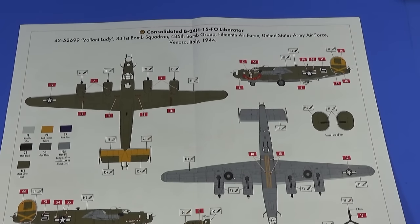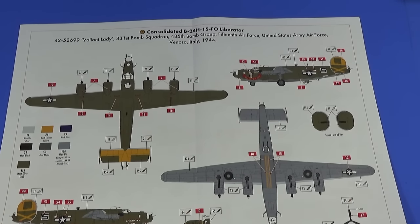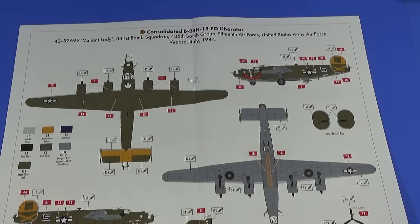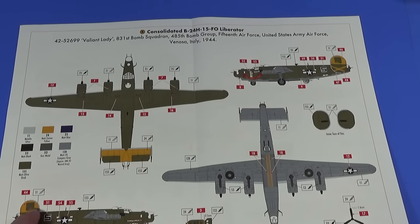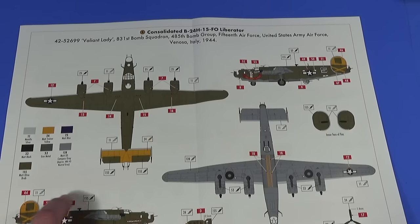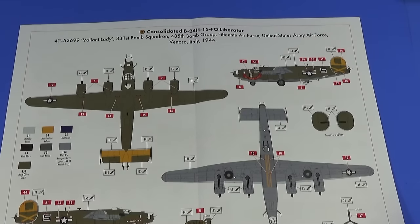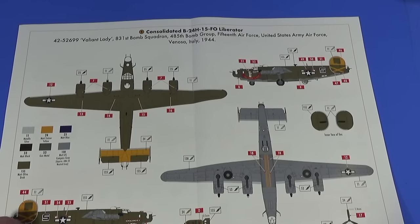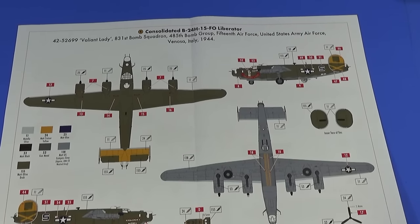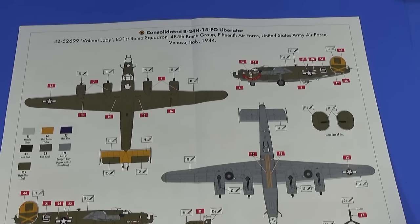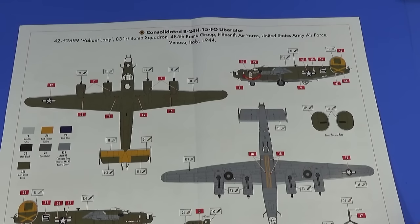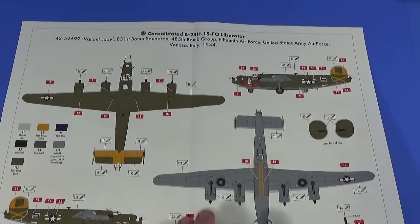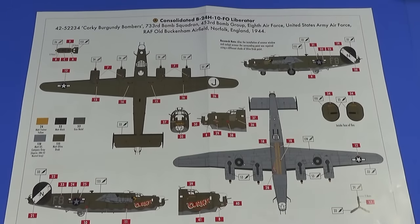Yeah. And so very straightforward. There's not that many stencils to put on, which is a delight, because some later aircraft had a lot of stencils for no readily apparent reason. This is probably the kit, the finish I'll do, the box one. I like the look of it a bit better, to be honest with you. It's 42-52234, Corky Burgundy Bombers of the 733rd Bomb Squadron, part of the US 8th Air Force. Yeah, that all looks very good. Lots of nice little details. The American forces at the time like painting all sorts of stuff on those. It really brings up the kit, really. And on the back is the B scheme of 42-52699 Valiant Lady of the 831st Bomb Squadron in the 15th Air Force in Italy. Again, similar sort of thing.